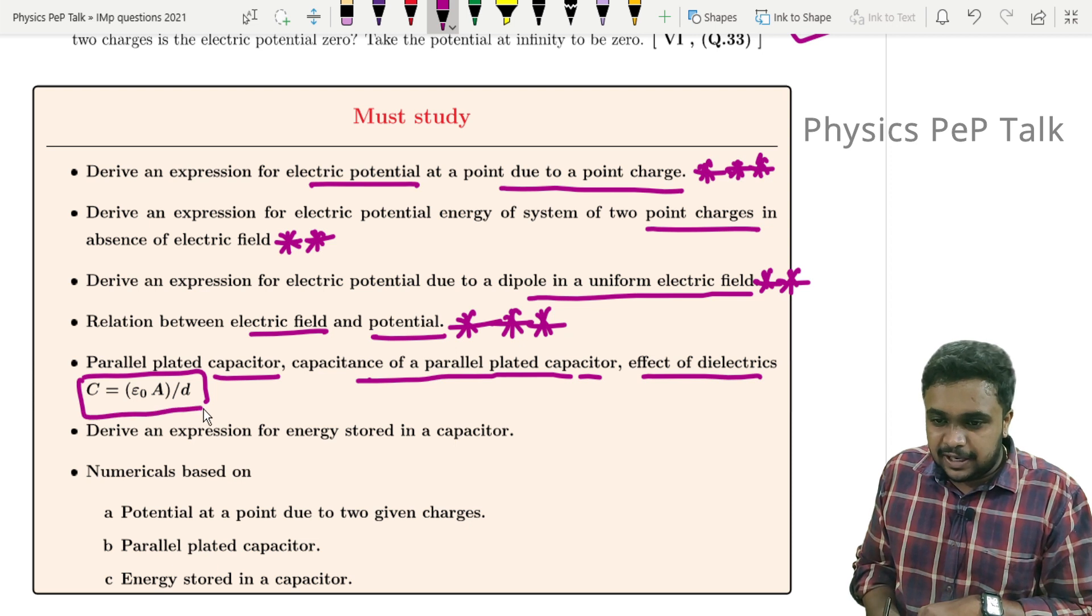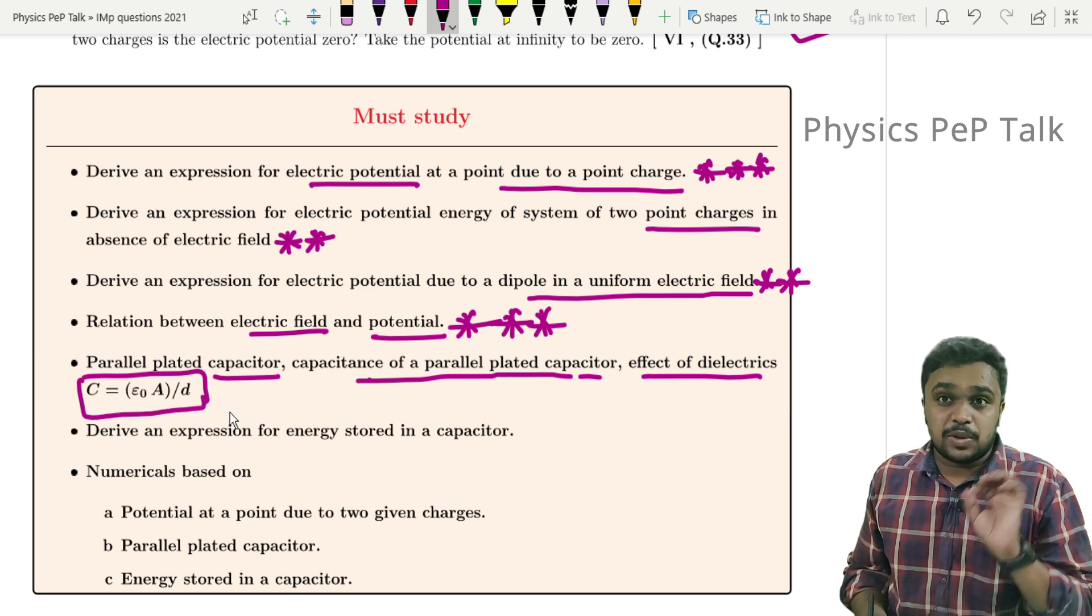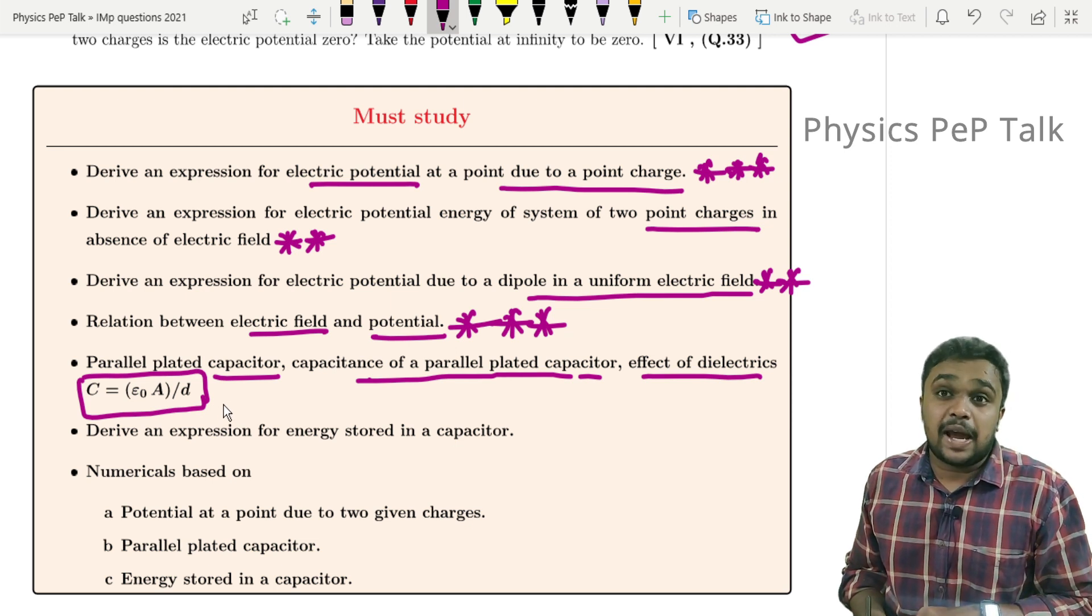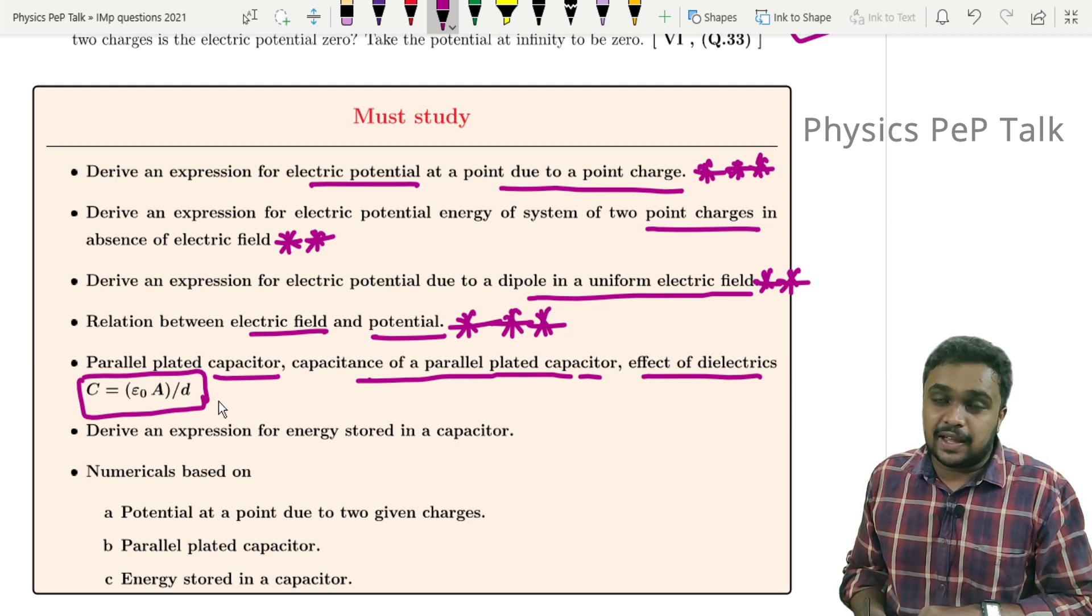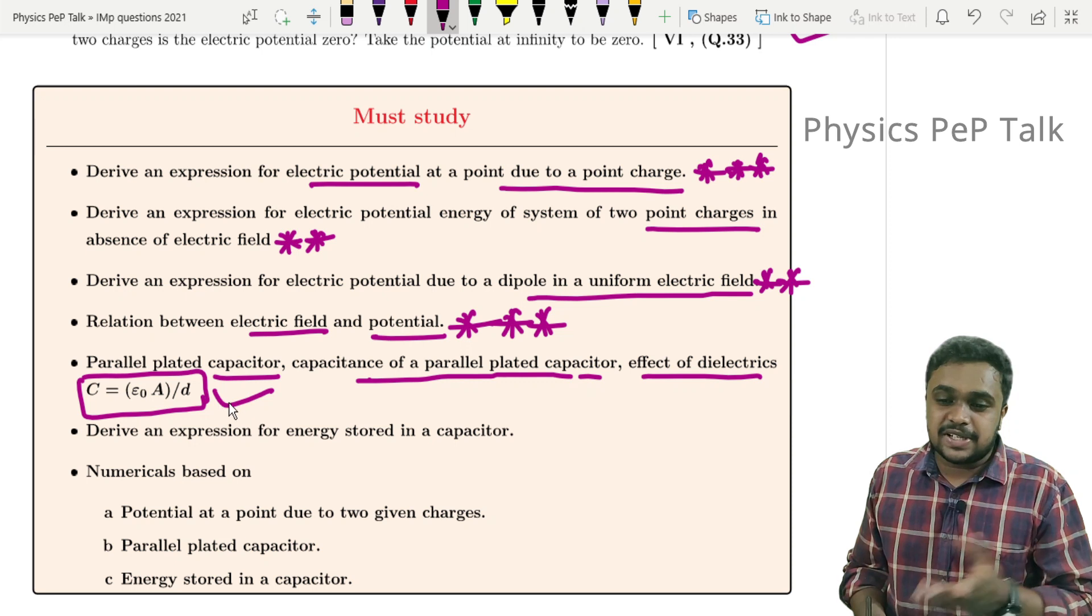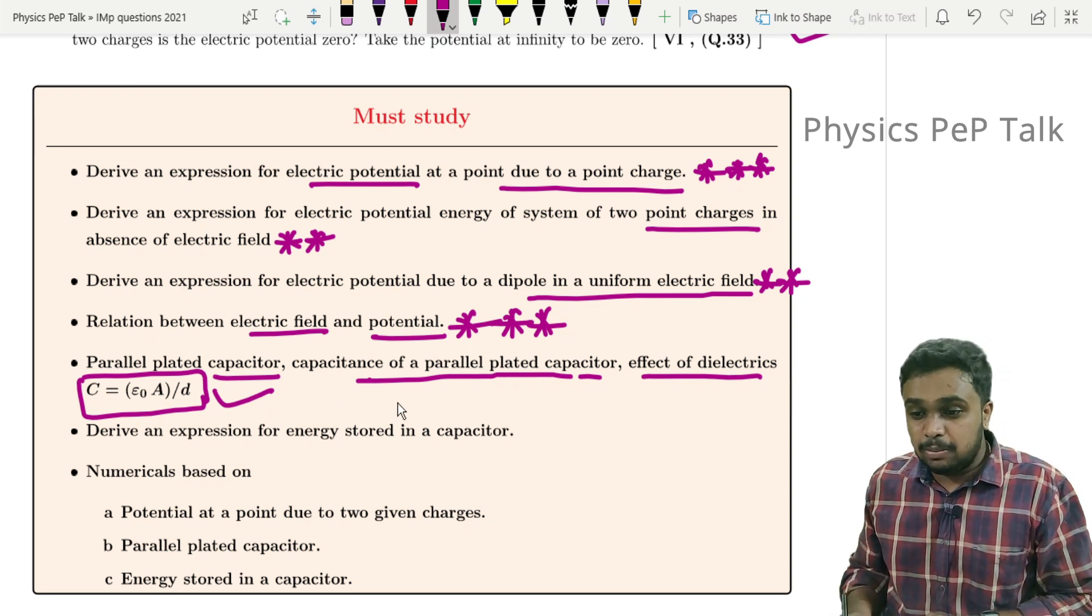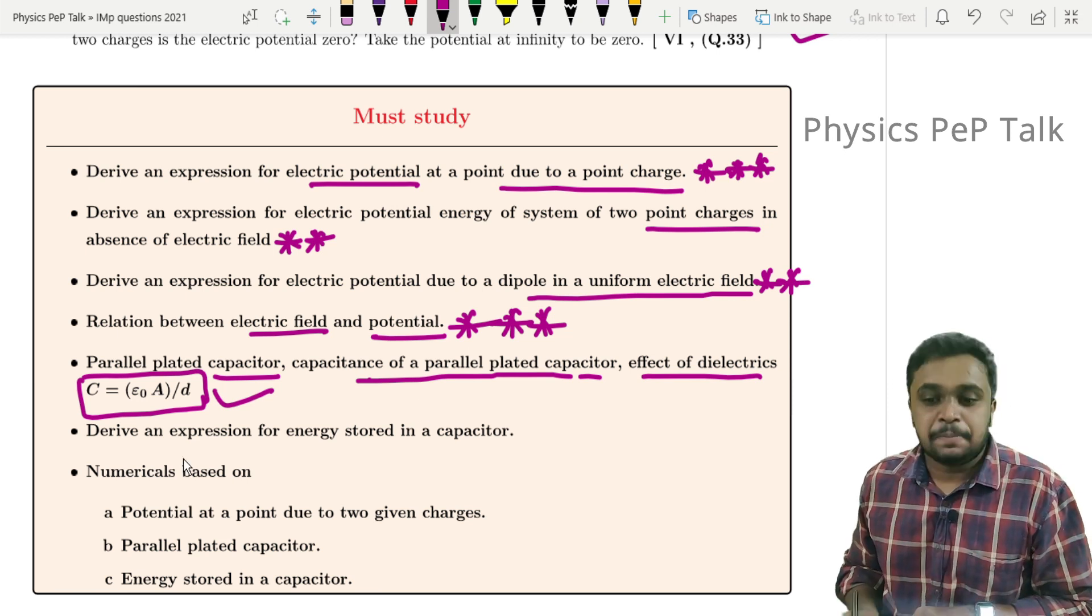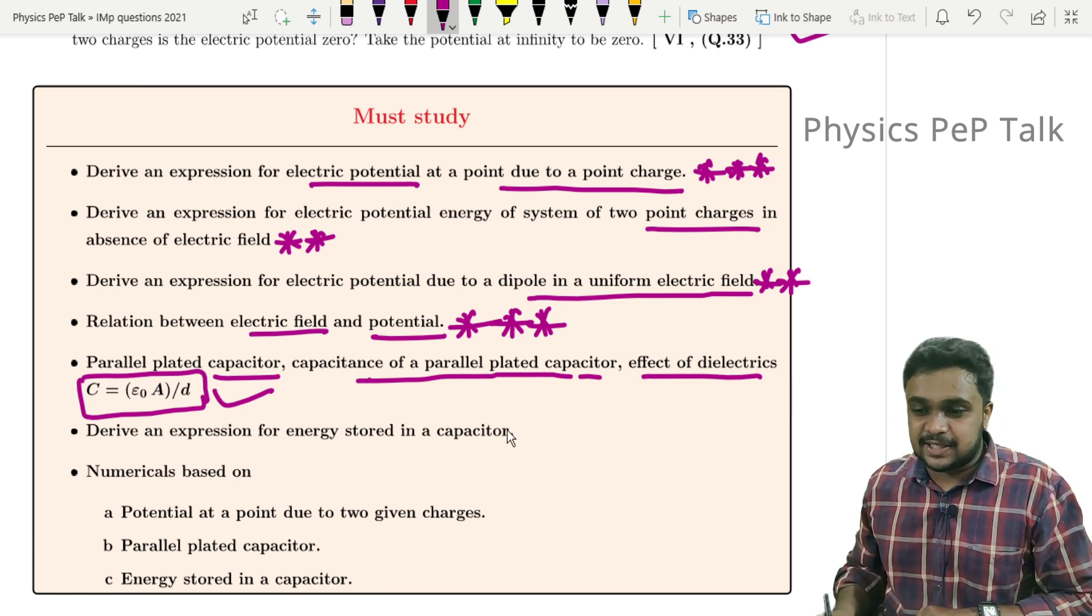Next, parallel plate capacitor, capacitance of a parallel plate capacitor, effect of dielectrics. There's one formula for this: C = ε₀A/d. Based on this, they ask: on what factors does the capacitance of a parallel plate capacitor depend upon? This is useful for problems. Also, series and parallel combination of capacitance.